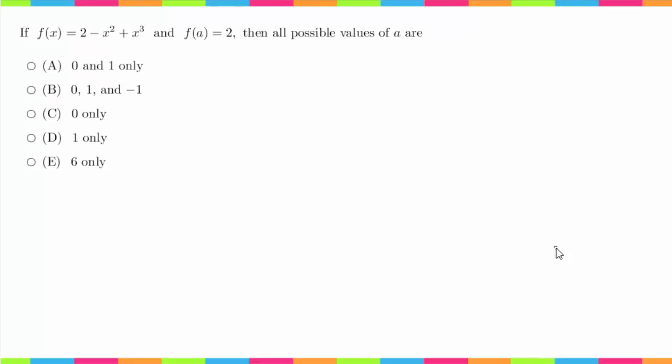Hey guys, welcome back. We're now working on question number 40 which says: if f(x) = 2 - x² + x³ and f(a) = 2, then all possible values of a are what?